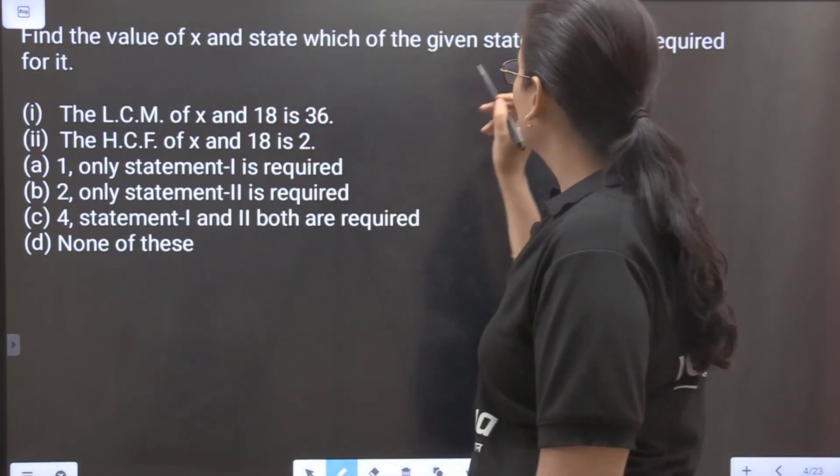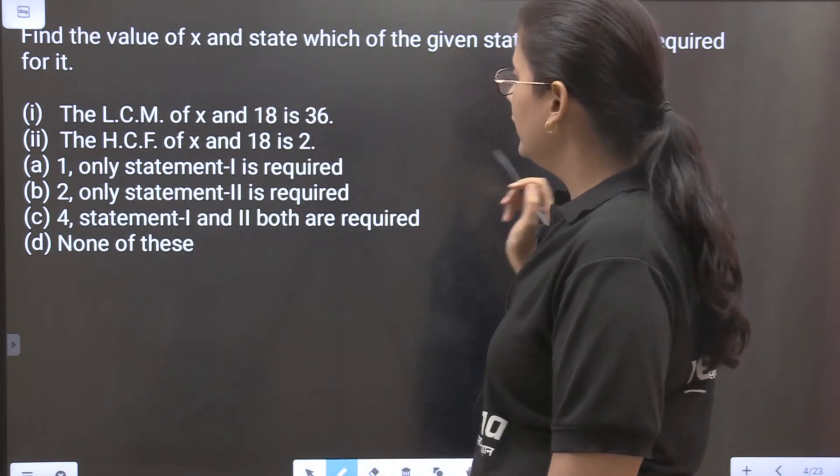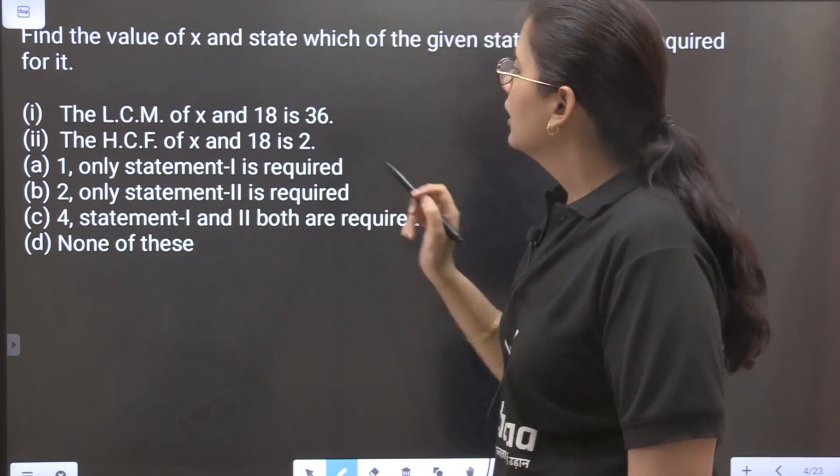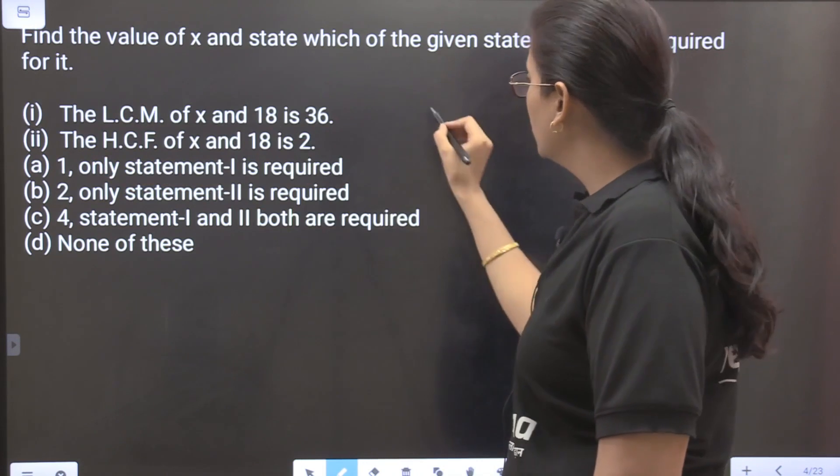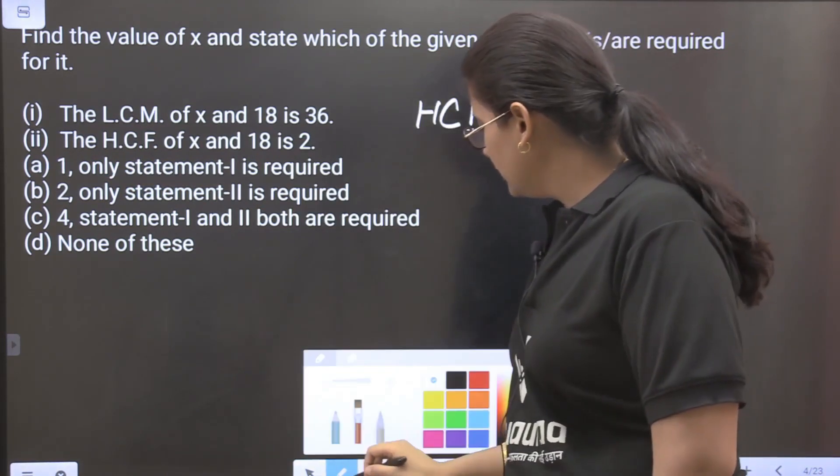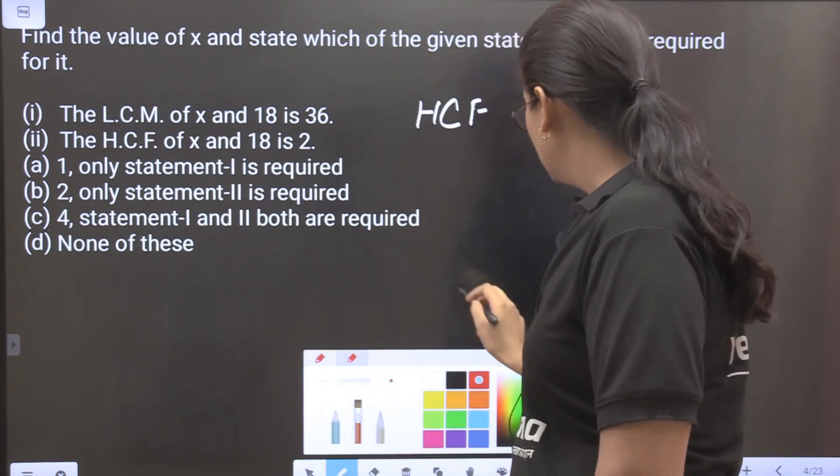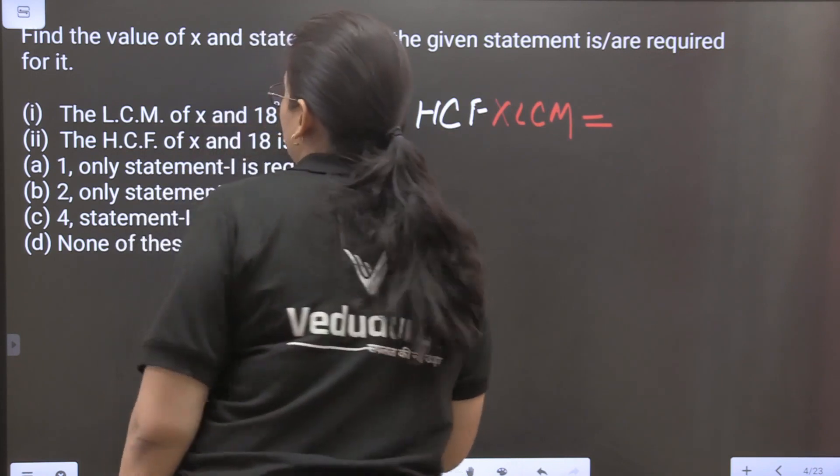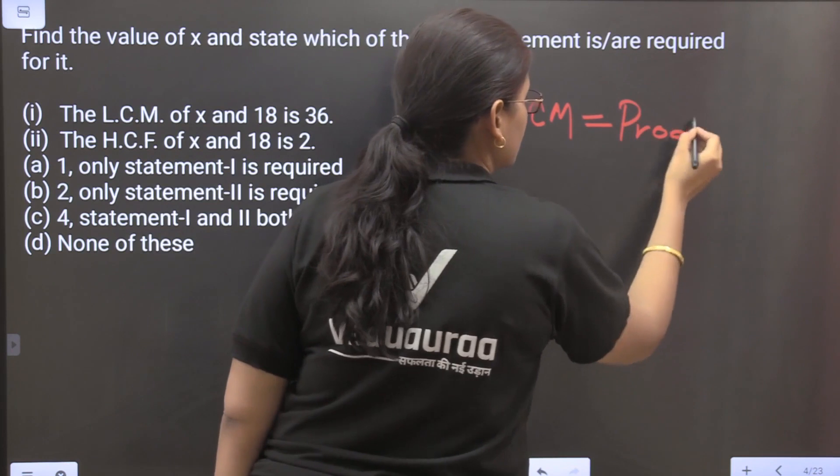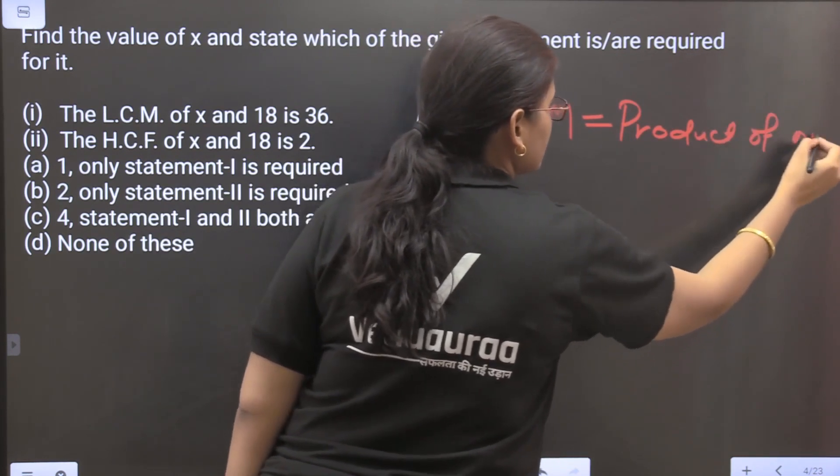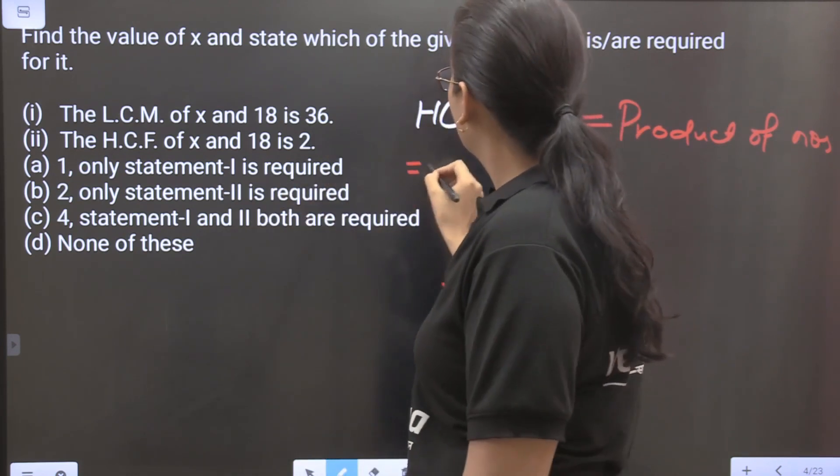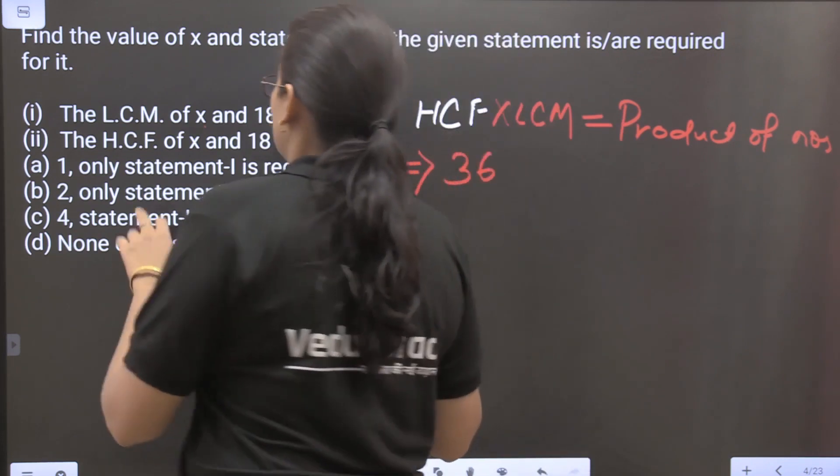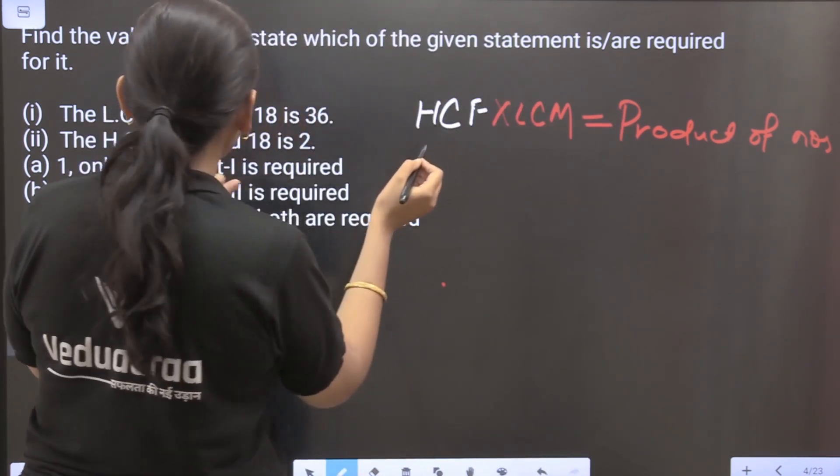Now coming to the next question. Find the value of x and state which of the given statements are required for it. Now the LCM of x and 18 is 36 and the HCF of x and 18 is 2. So we already know that HCF into LCM is equal to product of the two numbers. So here it is saying that LCM of x and 18 is 36, so HCF of x and 18 is 2. So 2 into 36 equals the two numbers which are x into 18.